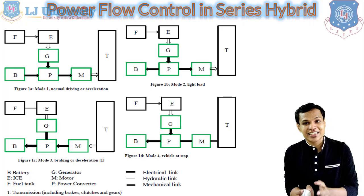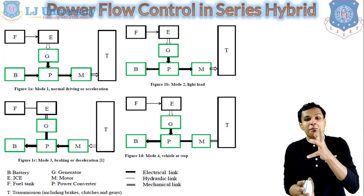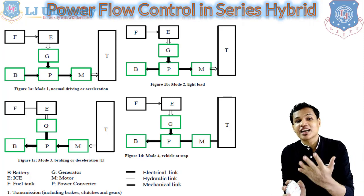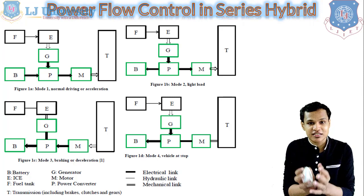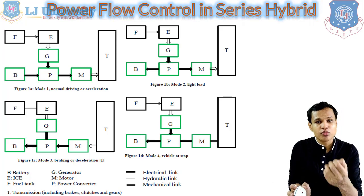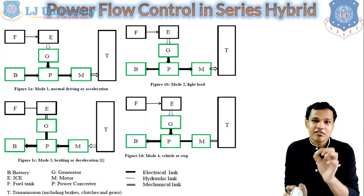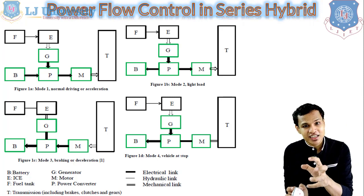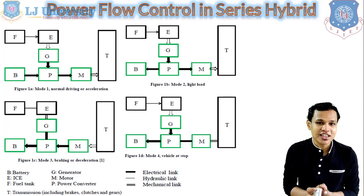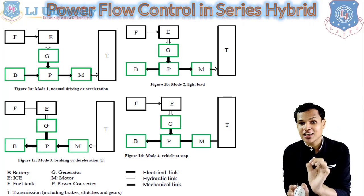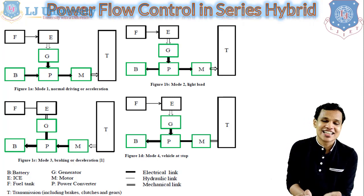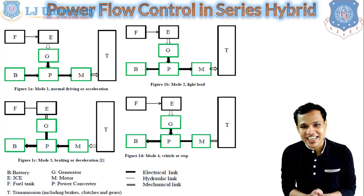Mode 3 shows the braking or deceleration condition. In this case, the engine will not generate any power. The power from the transmission is transmitted back via the motor, which works as a generator — that is the regenerative braking system. The power from the motor-generator is transmitted through the power converter back to the battery for charging. So at the time of braking or deceleration, the energy that would be wasted is used to charge the battery.